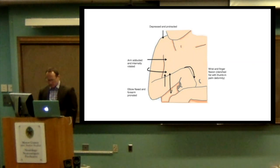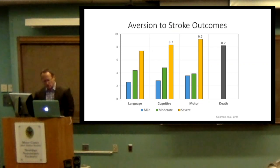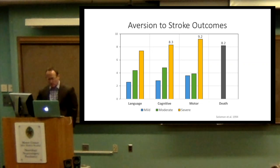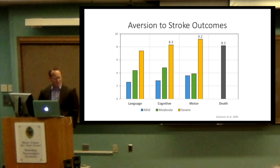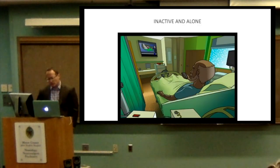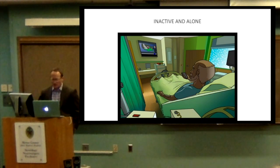Here's a slide I like: when you ask patients who are at stroke risk but have not had a stroke to rate from zero to ten what would be the worst outcome, motor deficit is considered the worst possible outcome — more than death, more than cognition, more than language. That's fascinating. These were over two hundred patients, so not to be a motor chauvinist, but there it is.